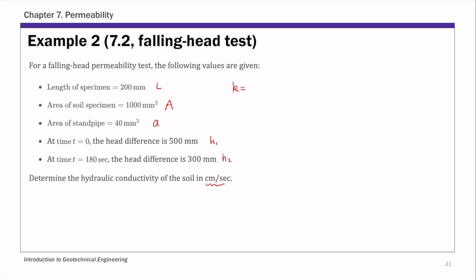the permeability K is 2.303 times small a L over capital A times T, then log of H1 over H2. So log base 10 of H1 over H2.